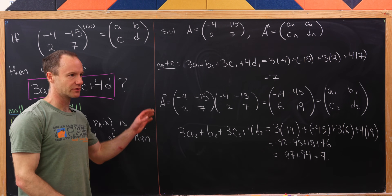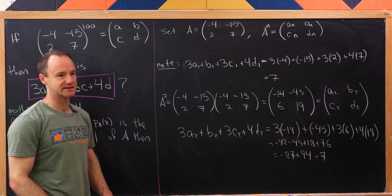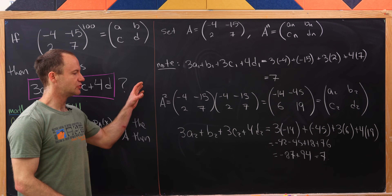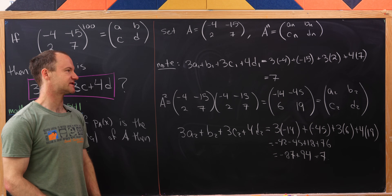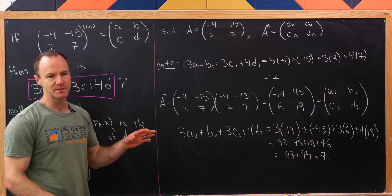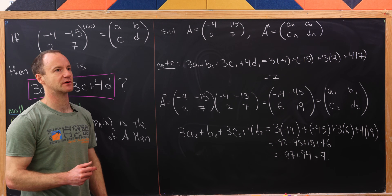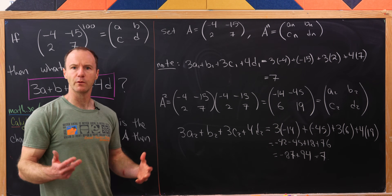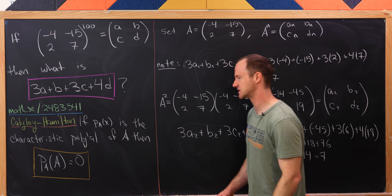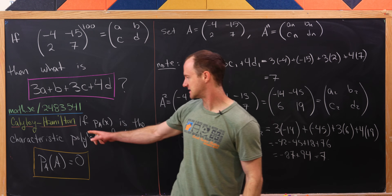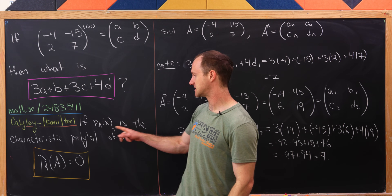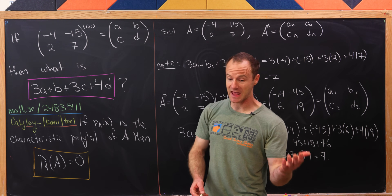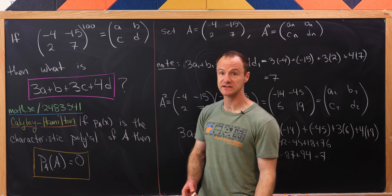Of course that's not a proof — that's just the first couple of cases. I think there's a very elementary way to always get the sum of 7, perhaps with an inductive argument, but we're going to use the Cayley-Hamilton theorem. It says: if P_A(x) is the characteristic polynomial of A, then evaluating A at P gives zero.